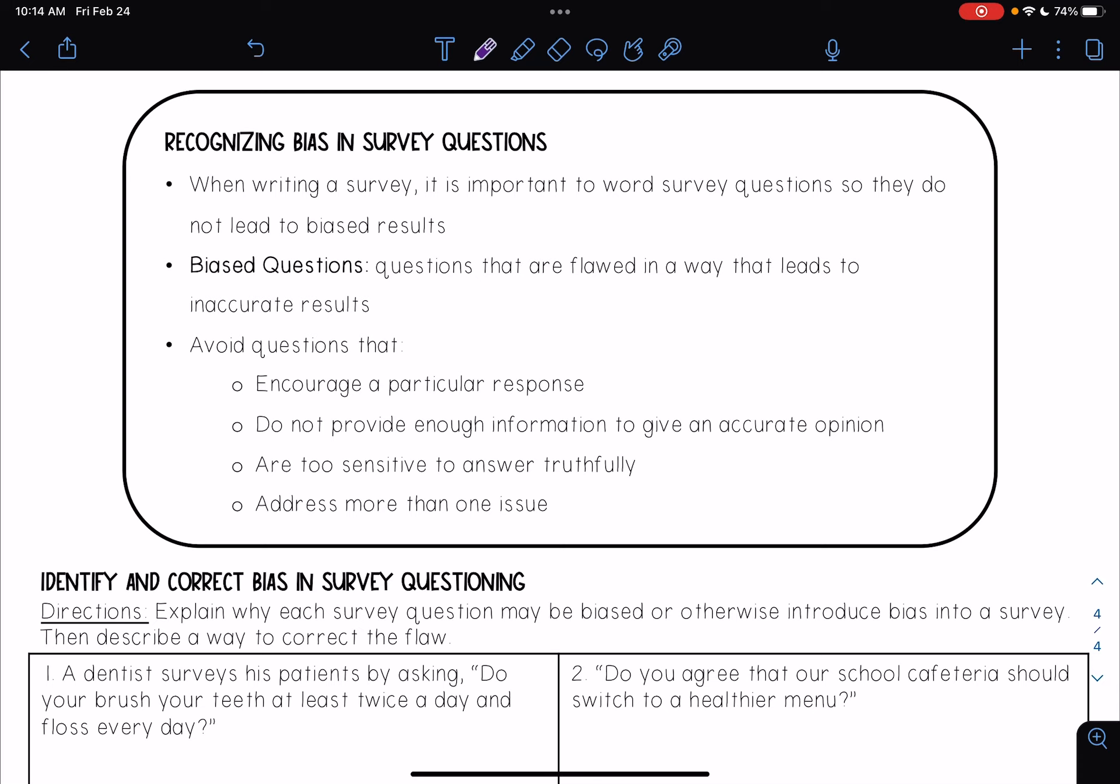Biased questions are questions that are flawed in a way that leads to inaccurate results. We want to avoid questions that encourage a particular response, do not provide enough information to give an accurate opinion, are too sensitive to answer truthfully, or address more than one issue.